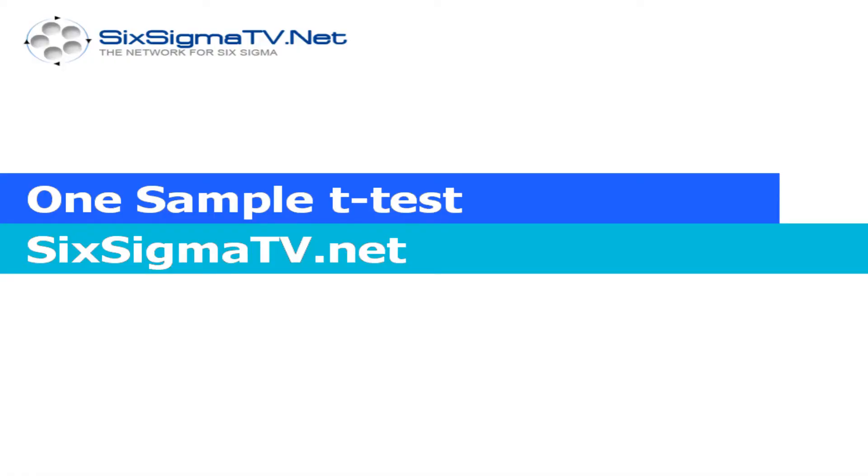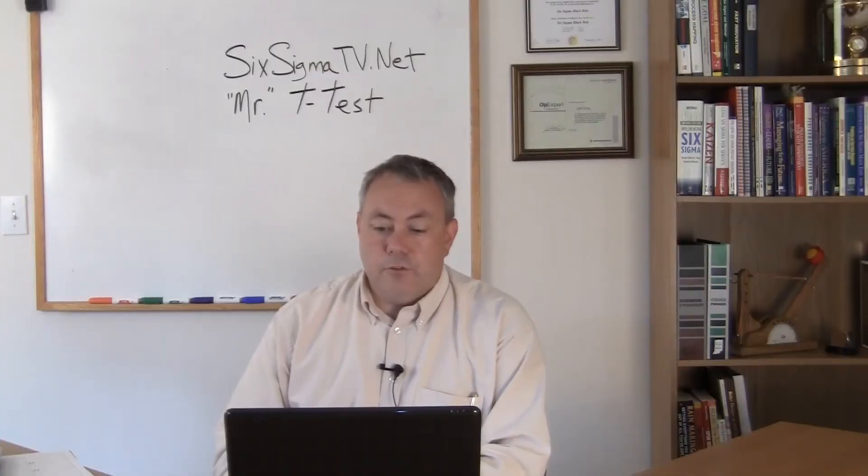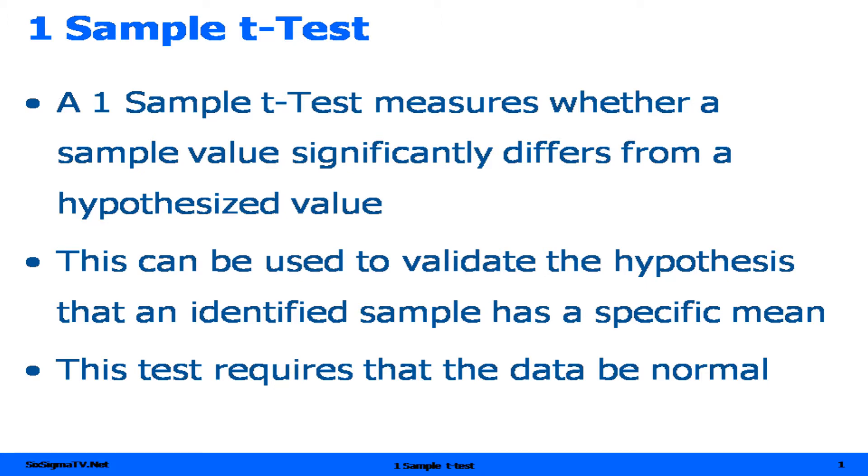The one sample t-test is one of the most basic tests of hypotheses used in Six Sigma. It is used to determine if there's a statistically significant difference between the mean of our sample data and our target value.